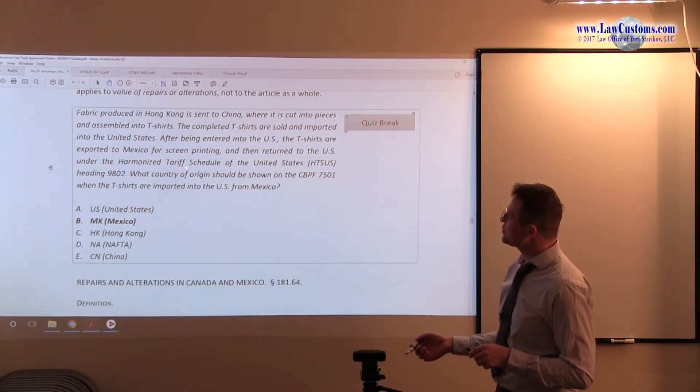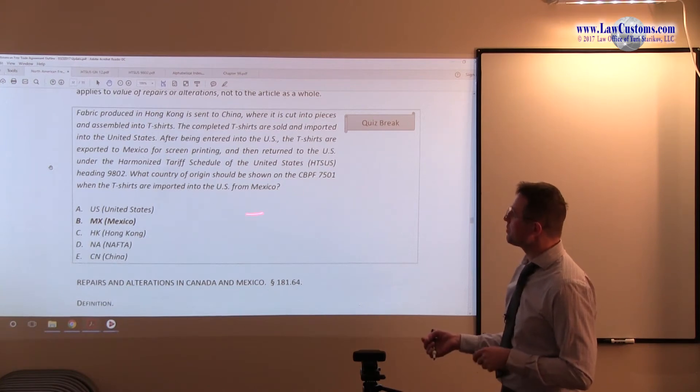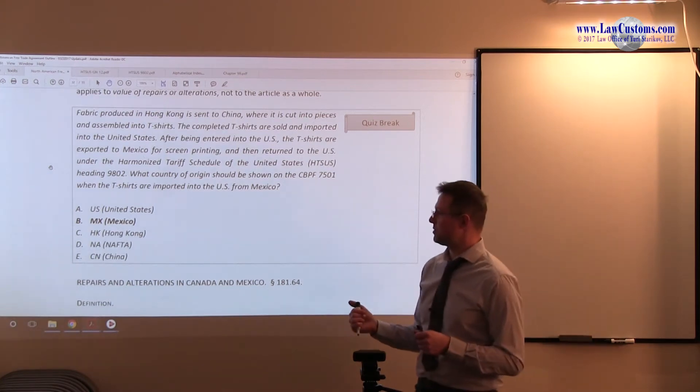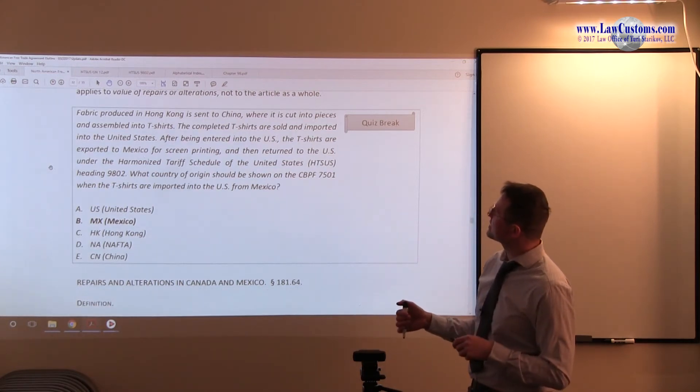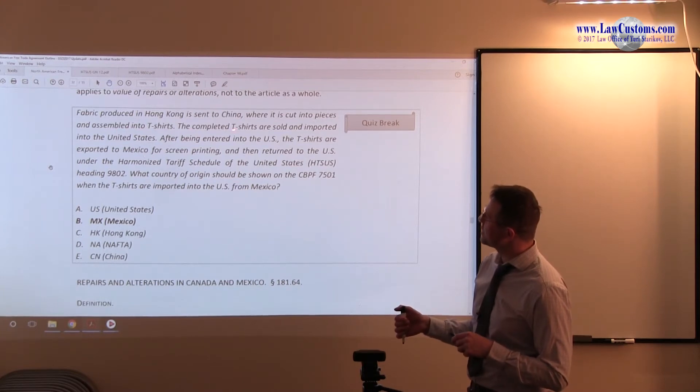So under the HTSUS 9802, what is the country of origin that should be shown on the 7501, which is the entry summary, when the T-shirts are coming back from Mexico, right? So usually, the question would be, is the country of origin Hong Kong or China?